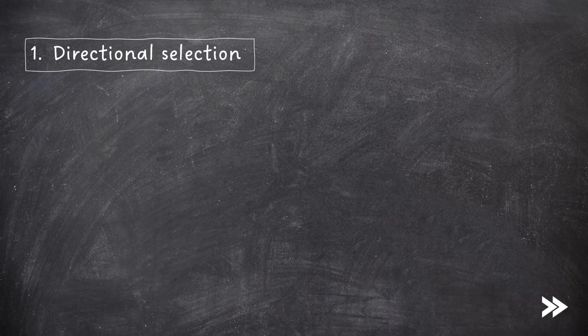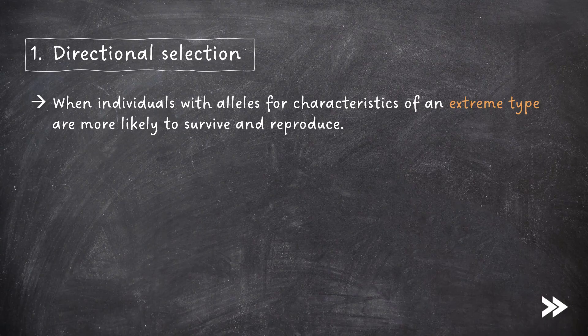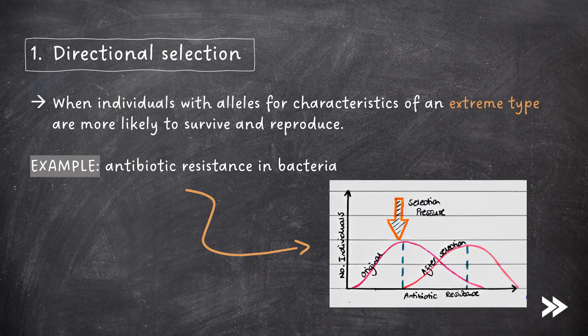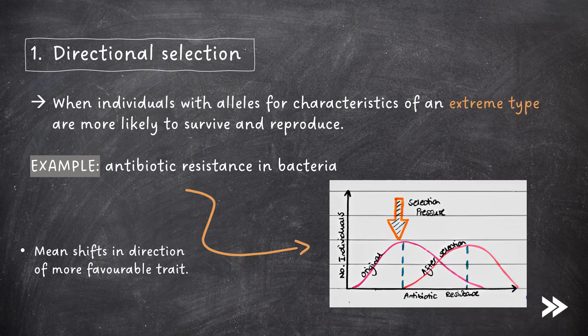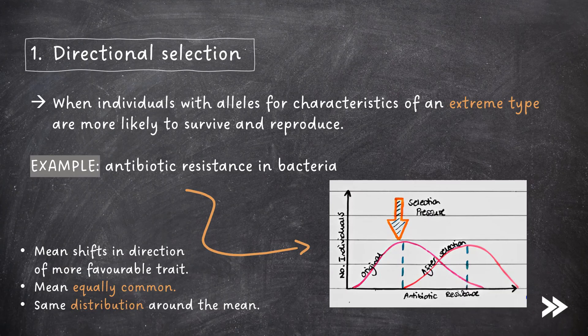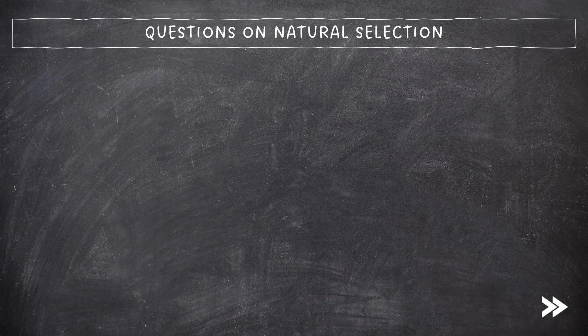Let's start off with directional selection. This is when individuals with alleles for characteristics of an extreme type are more likely to survive and reproduce. The specification mentions antibiotic resistance in bacteria as an example, so we'll look at this in just a moment. In directional selection, the mean shifts in the direction of the more favourable trait. The mean is equally common and there is the same distribution about the mean. For questions on natural selection, mark schemes usually follow the same general pattern. You would very likely be given an example of a trait and then be told that this trait is favoured in natural selection.